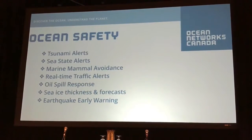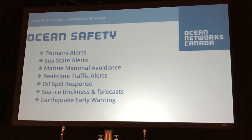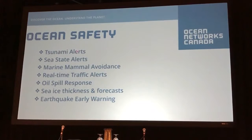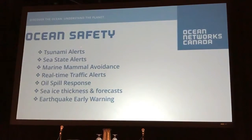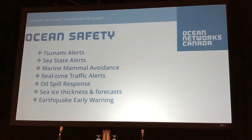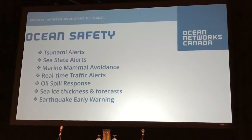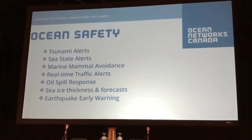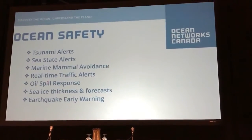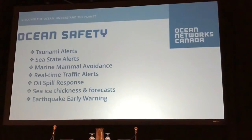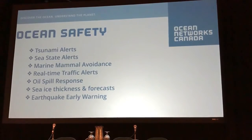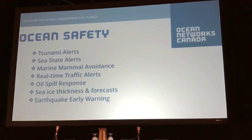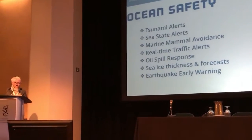Coming back to the smart ocean data products: we have the ability to provide alerts where our data goes to the Pacific Tsunami Warning Center, but we've also installed a radar system off the west coast of Vancouver Island to identify tsunami waves generated at our subduction zone. That system just got operational and we actually detected a big wave generated from a major storm two weekends ago. We're developing sea state alerts and marine mammal avoidance. We provide real-time ship traffic alerts for First Nations. Our data are used for oil spill response. Sea ice thickness and forecasts are now being ingested into the Canadian Ice Service models to forecast freeze-up and thaw — critically important for northern communities for resupply planning.